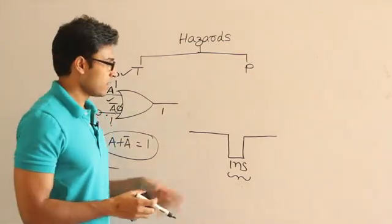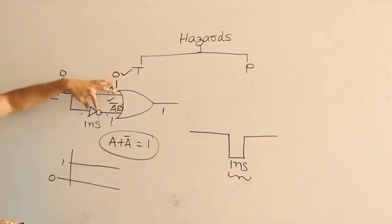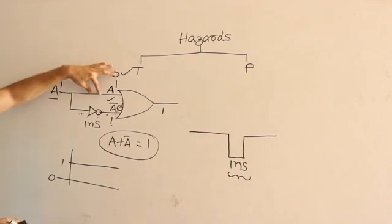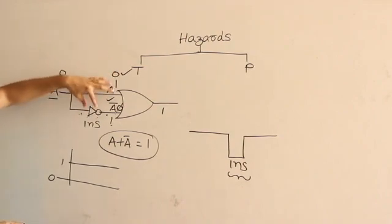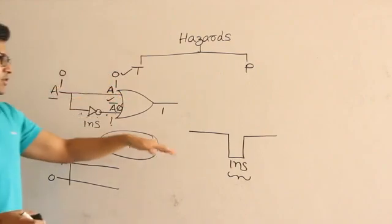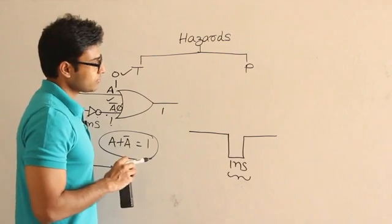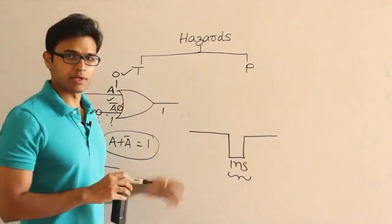We need not do anything. If you don't want any temporary hazard, what you could do is increase the delay here also by putting a delay gate so that these delays will match up and the signal will reach the other side at the same time without any hitch. So this one you need not worry about, it is going to correct itself.